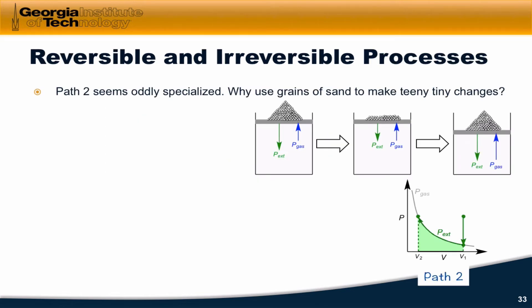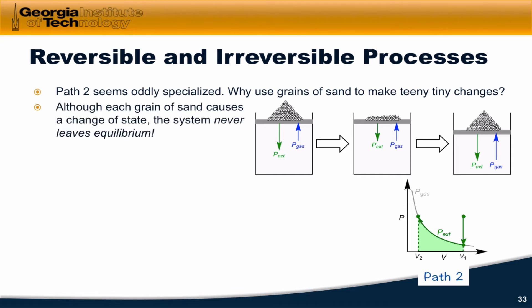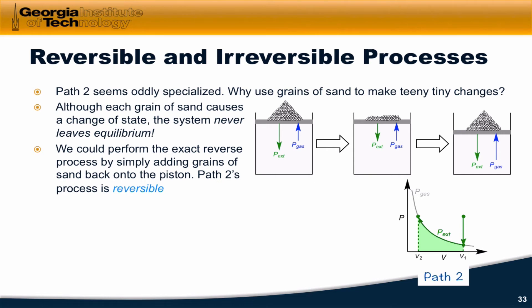Path two seems kind of unique. Why are we using grains of sand to make these tiny changes in the external pressure? What using grains of sand does is it ensures that the external pressure is equal to the gas pressure throughout the process. That means that the system and surroundings never leave a state of equilibrium in which the two pressures are equal. They start out in disequilibrium, but remember we're holding the piston in a fixed position at this very initial state. So after the initial state, the system never leaves equilibrium. This means we could perform the exact reverse of the process — moving along the gas pressure versus volume curve — simply by adding sand back onto the piston.